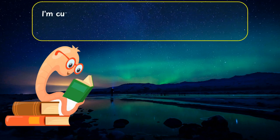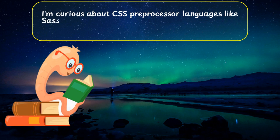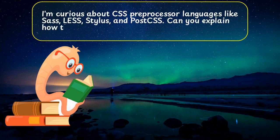I'm curious about CSS preprocessor languages like SASS, LESS, Stylus, and PostCSS. Can you explain how they compare?